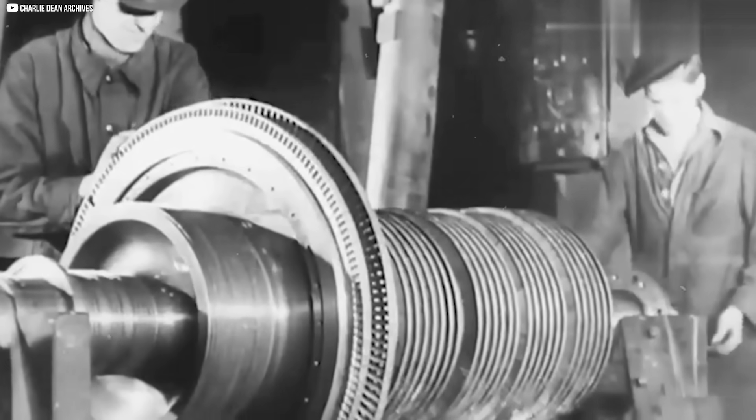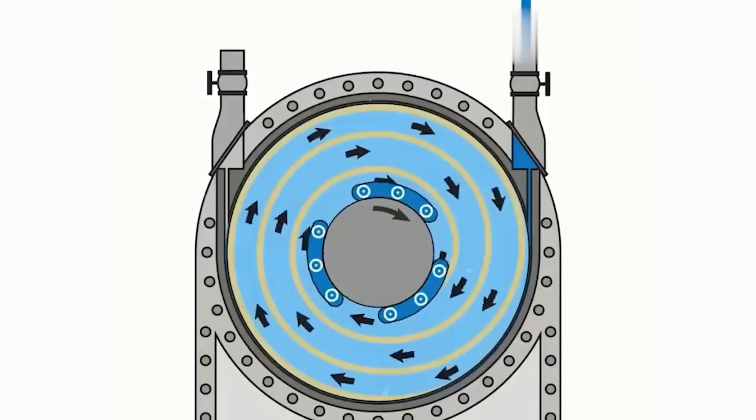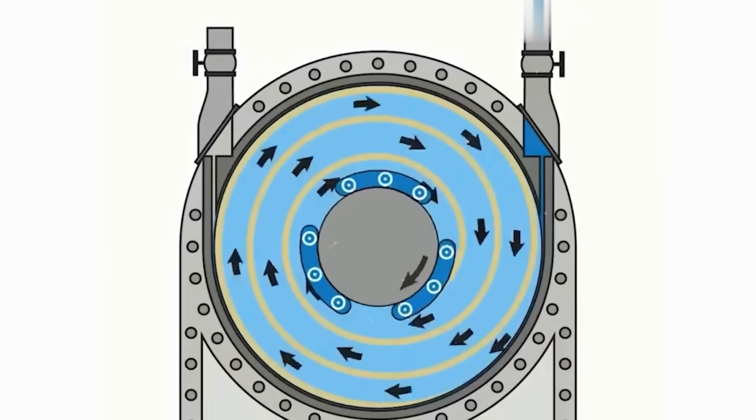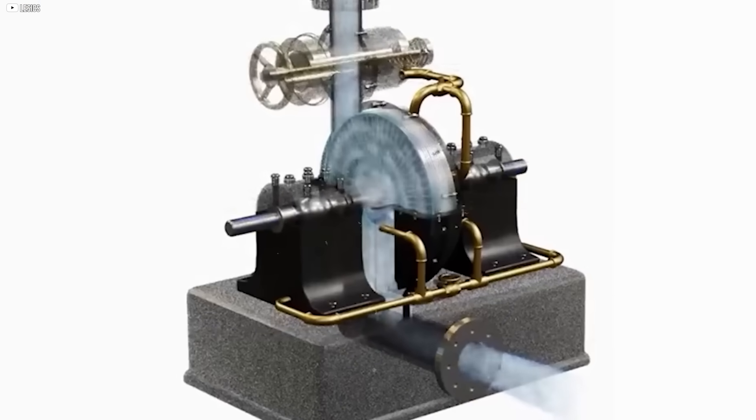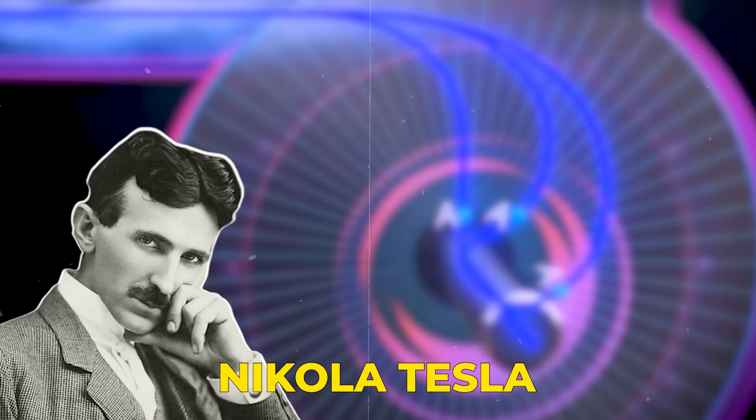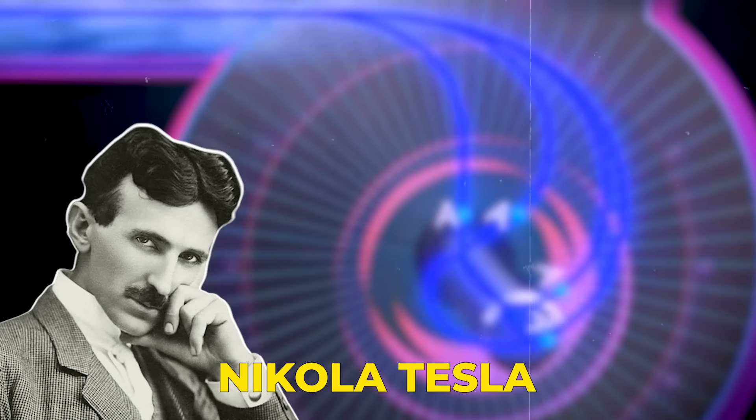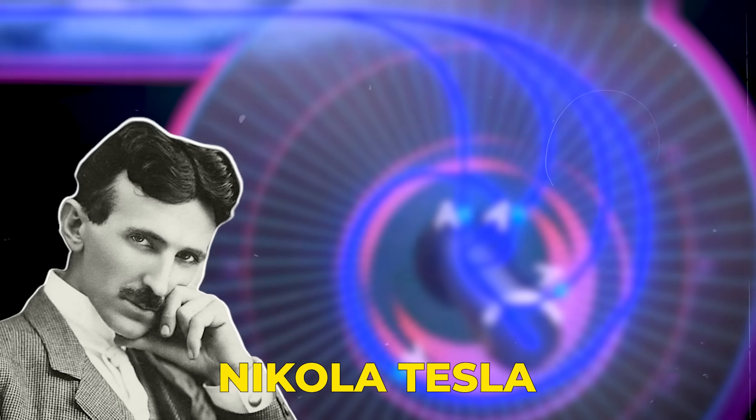This is the story of an invention that dared to spin without blades. At a time when steam turbines ruled with complex curves and metal vanes, Nikola Tesla envisioned a smooth, simple, silent, dancing with the flow of fluid.